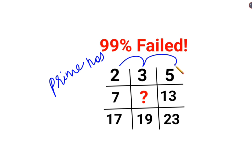2 followed by 3 followed by 5 which is followed by 7. Then the next number which happens to be a prime number is 11. And then we have 13 then 17 then 19 and then 23.